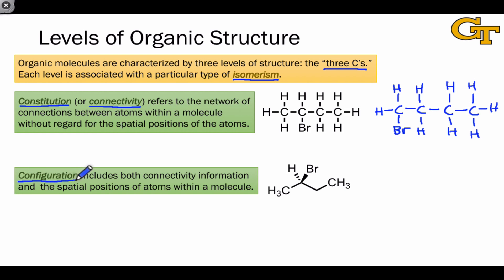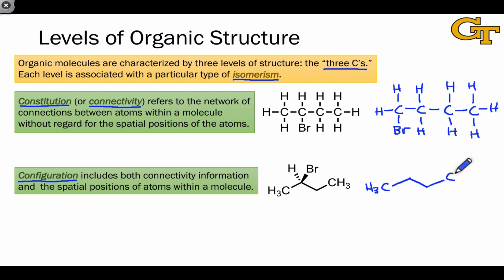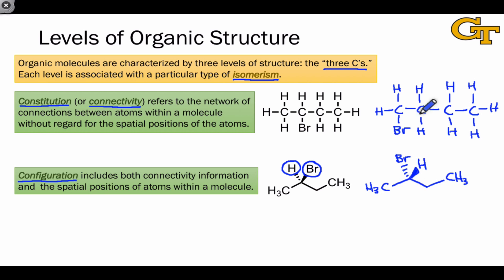Configuration, which we'll discuss in detail in a later lesson, includes both the connectivity information and the spatial positions of atoms within a molecule without regard to relatively low barrier processes like bond rotations. Configurational isomerism involves leaving the constitution the same but changing the spatial positions of atoms. If we exchange the positions of the bromine and hydrogen shown here, we end up with a molecule that is distinct from the original. These two molecules differ in configuration but have the same constitution and molecular formula, making them configurational isomers.